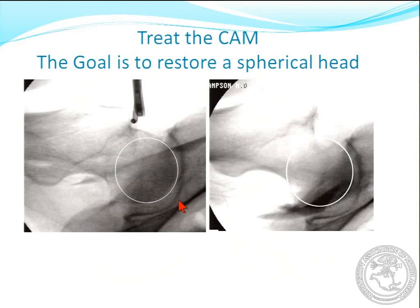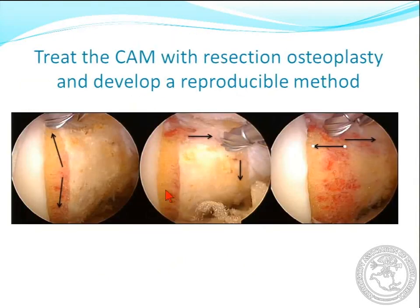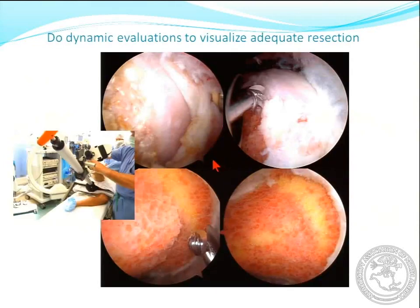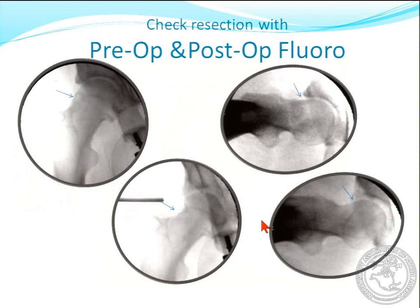The goal of CAM treatment is to make sure you get everything within the sphere — that's much more bone than we usually take off. Today we don't take as much bone off; we just want to contour. Mark Philippon and I were talking about how we contour now — he calls it making a blue slope, not a black ski slope. Make sure it's reproducible and that you can visualize it with motion, so do a motion study to confirm you've taken off enough. I like to do pre- and post-op fluoro to document that you have a nice contour of your head-neck junction.